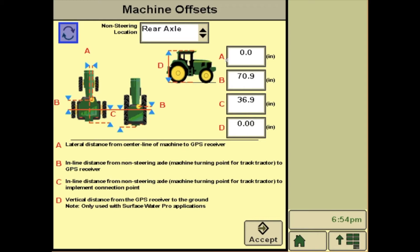Letter A is where the receiver sits relative to the center of the machine. B is inline distance from non-steerable axle to GPS receiver. C is inline distance from non-steerable axle to implement connection point, and then D is the height of the receiver.